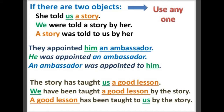Similarly, 'They appointed him an ambassador' can be written in passive as 'He was appointed an ambassador' or 'An ambassador was appointed to him.' Another example: 'The story has taught us a good lesson' becomes in passive 'We have been taught a good lesson by the story,' or 'A good lesson has been taught to us by the story.'